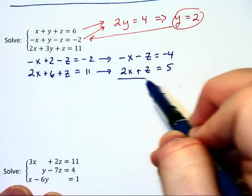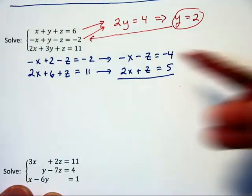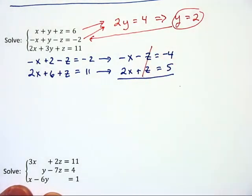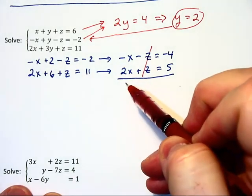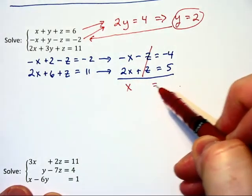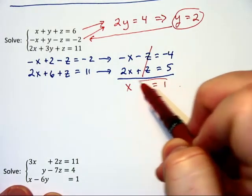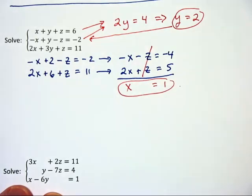Now, you will see that this is a perfect situation where the z's will cancel out automatically. And adding down, we will get x is equal to 1. So we have our second part of our solution.